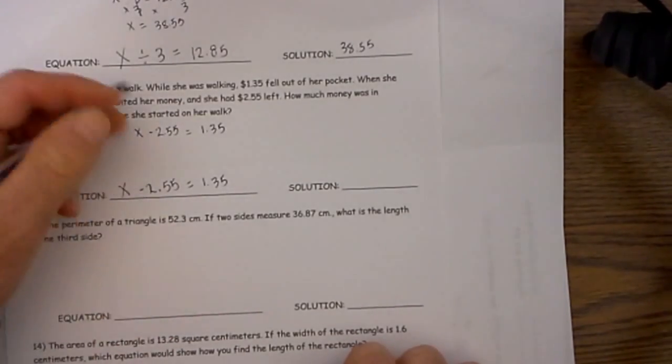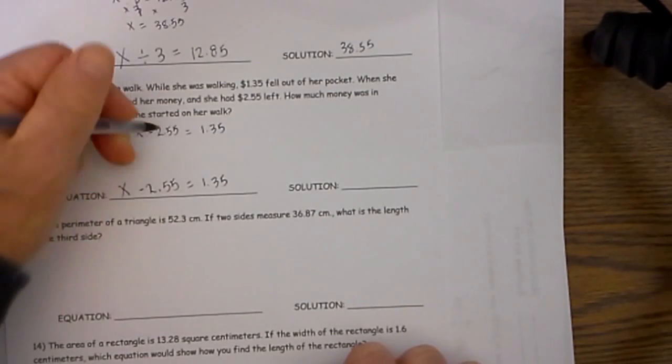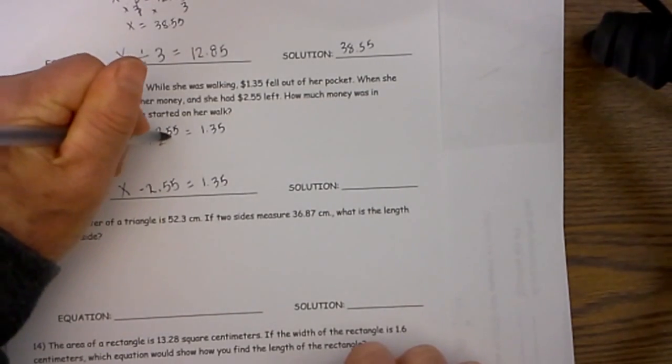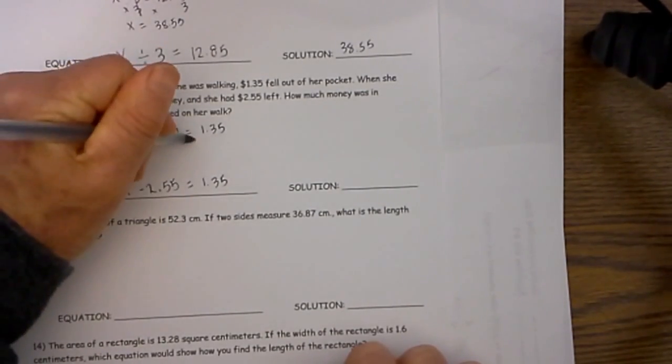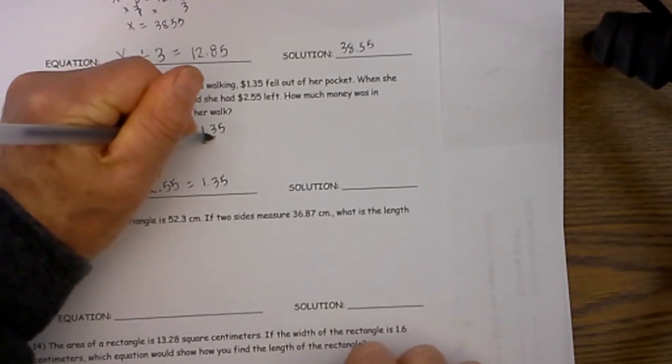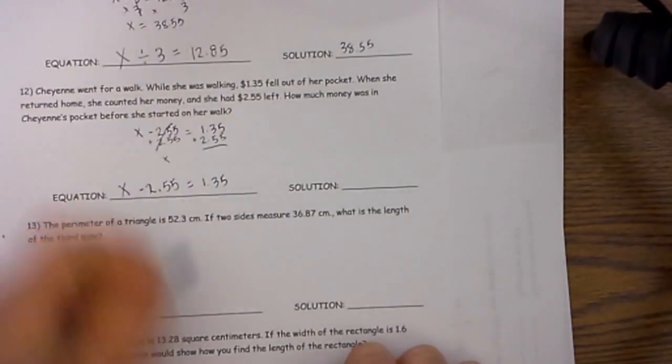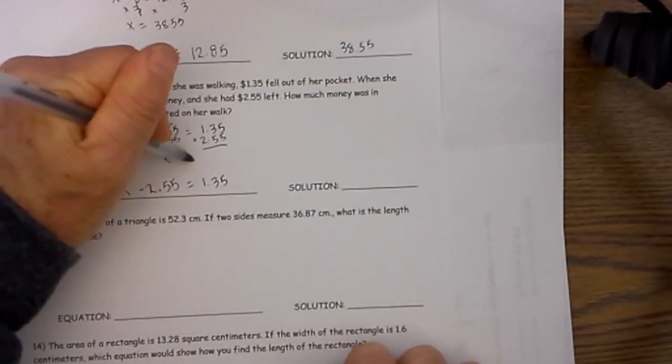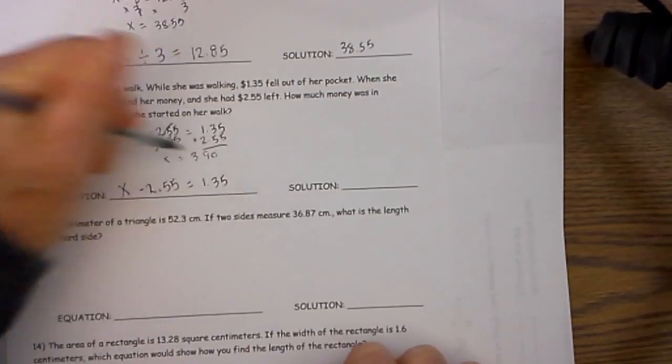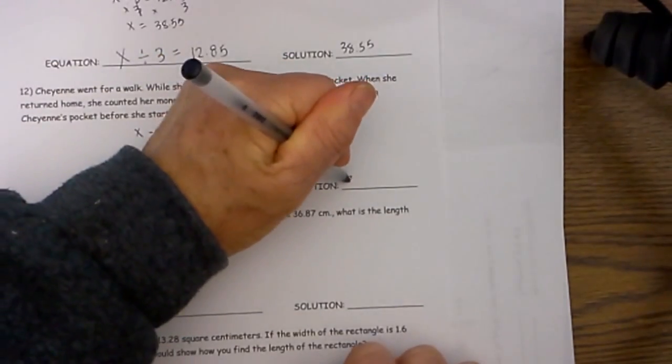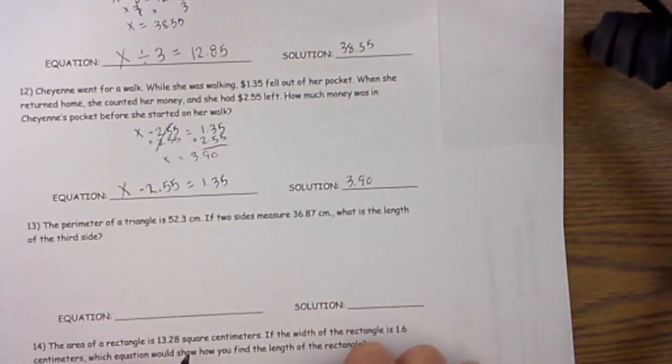So now we know to undo a subtraction we are going to do an addition. And so we will do that to both sides. So when she got home the $2.55 is cancelled and x is going to equal to $3.90. So the solution is $3.90.